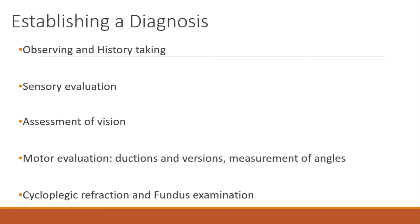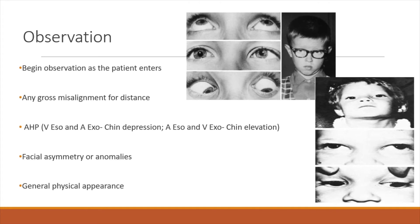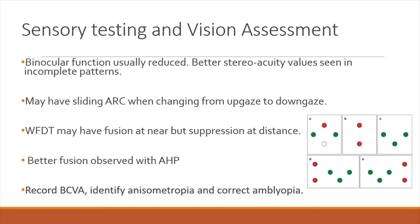These babies generally cross-fixate, so their abduction may appear limited. You want to occlude one eye and see if the other eye is moving fully, to differentiate these from bilateral sixth nerve palsies. During motor evaluation, we measure the angles too, and a cycloplegic refraction and fundus examination is necessary. Observe as soon as the patient enters — look for gross misalignment at distance, abnormal head postures, facial asymmetry or anomalies, and any syndromic associations.